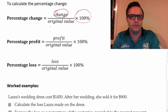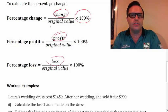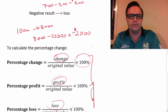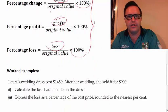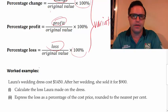Percentage profit is equal to the amount of profit divided by the original value times 100%. Percentage loss is the loss over the original value times 100%. So as you can see, all these are sort of just variations of the same formula and idea.